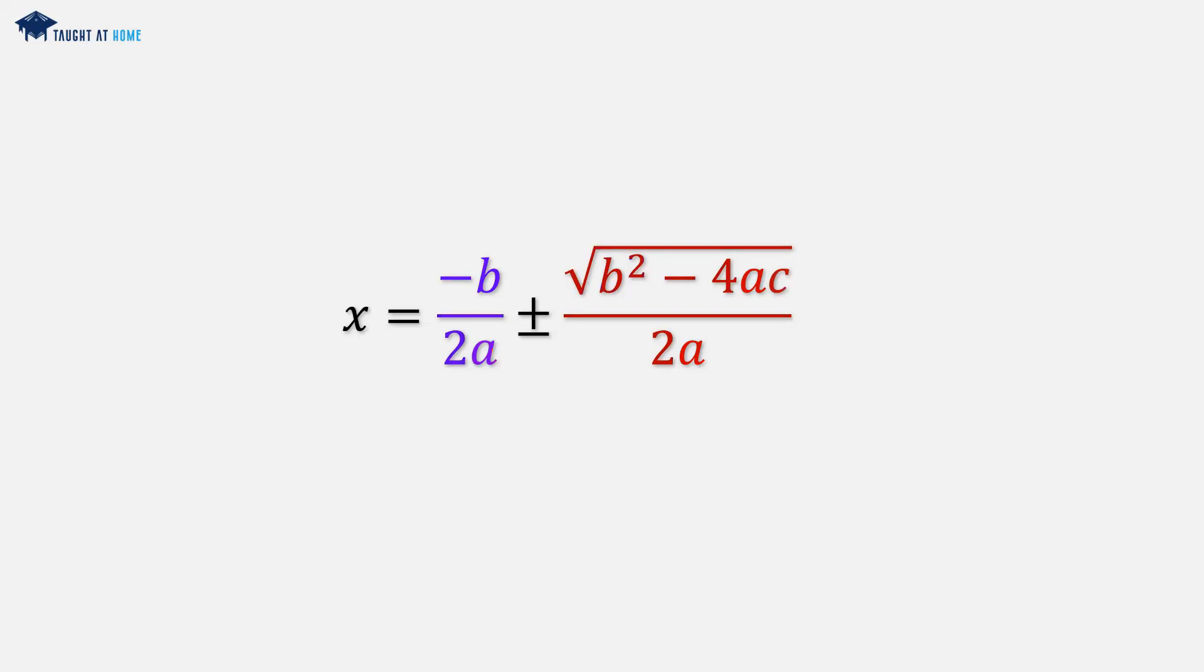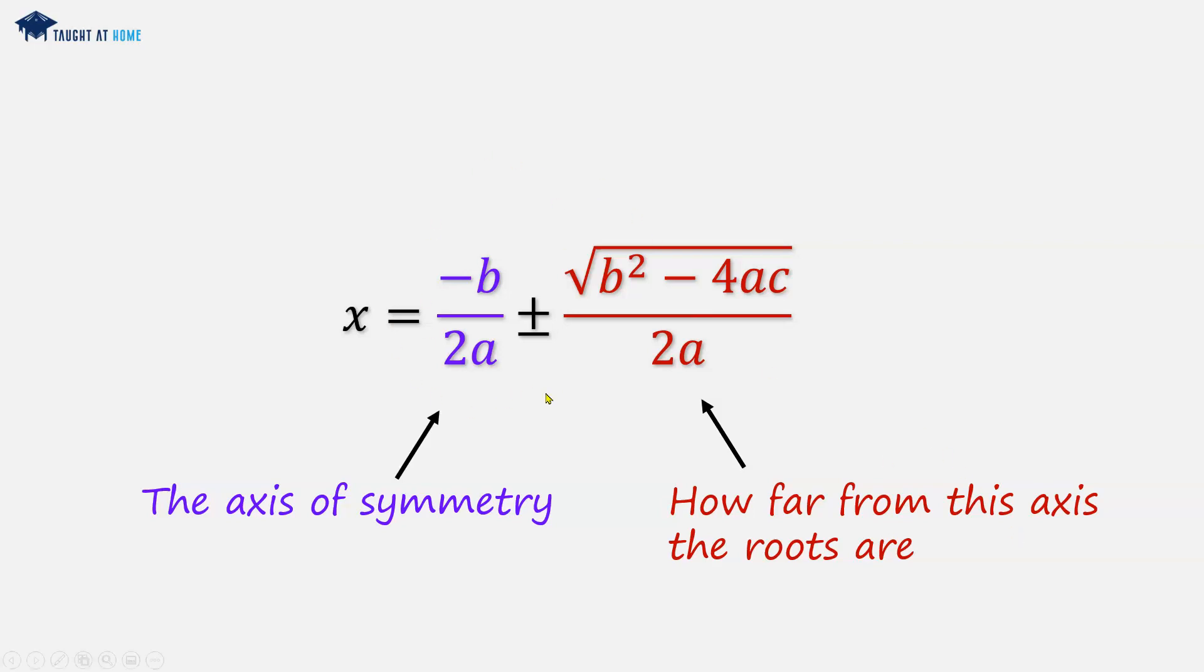We've got the minus b all over 2a part which tells us the axis of symmetry. And then plus or minus the square root of b squared minus 4ac over 2a tells us how far from this axis of symmetry the roots are. And we have two of them equidistant from the axis of symmetry, one on the right hand side and one on the left hand side, which is why you've got plus or minus.